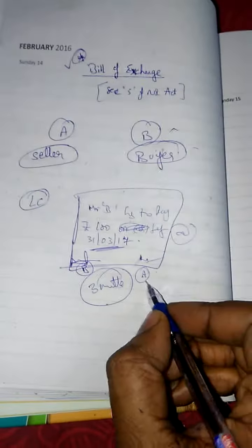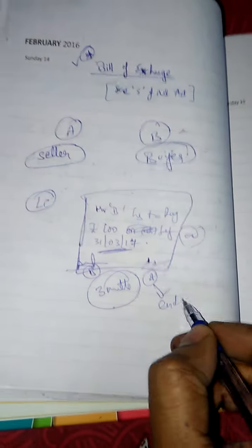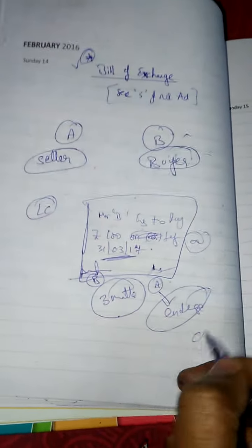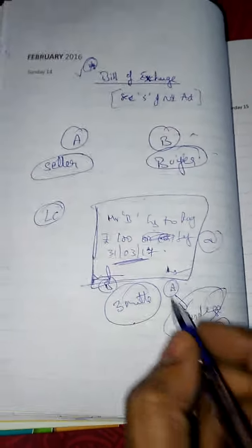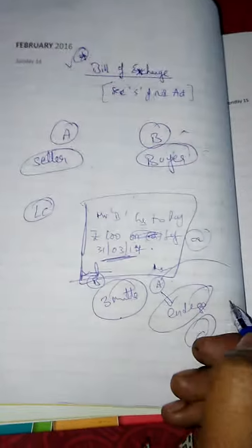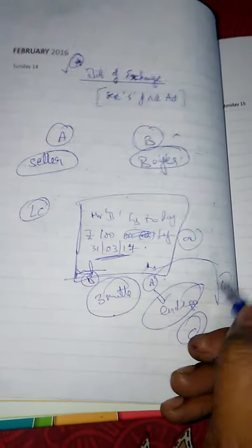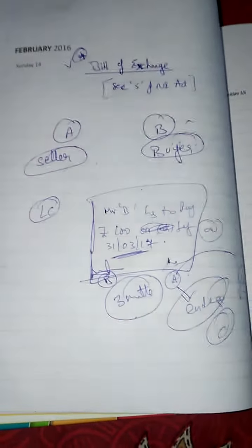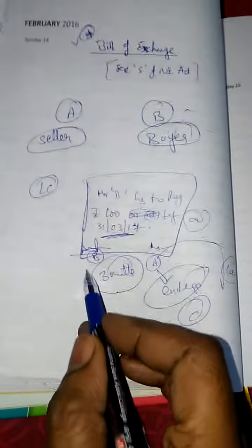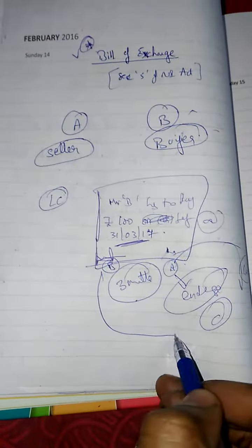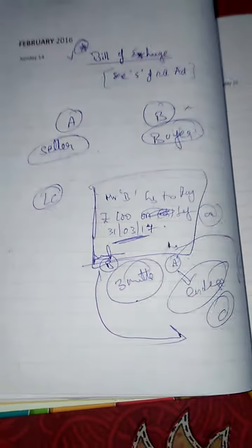Instead, A can endorse this bill to C, to whom A has to pay 100. So on the due date, B has to pay this 100 rupees to C.